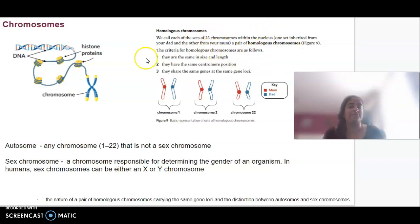For a chromosome to be homologous, they have to be the same size and length. They have to have the centromere position at the same location - the centromere is the center of that chromosome - and they have to share the same genes, the same gene loci.